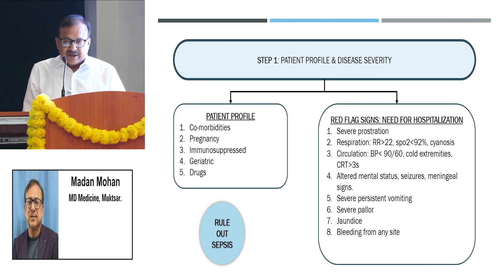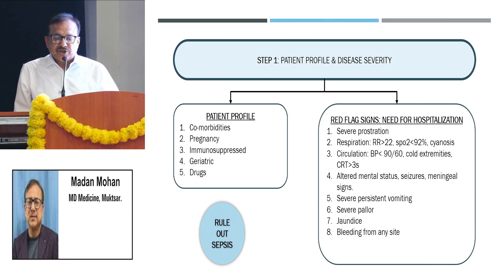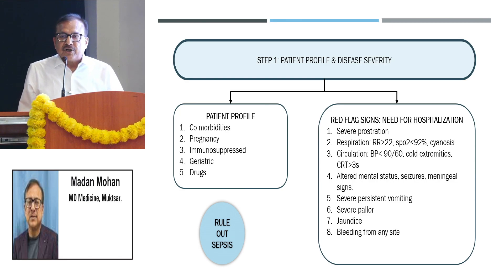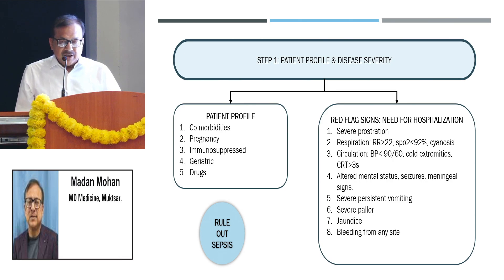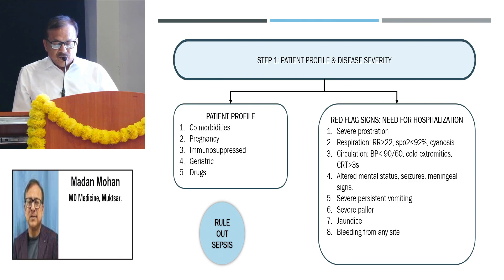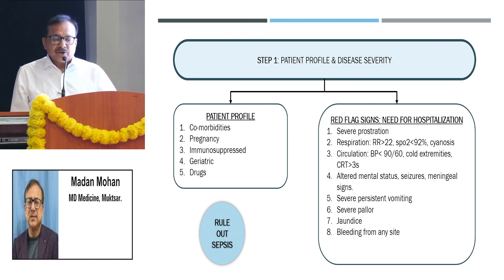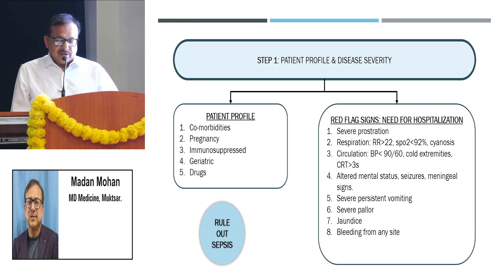The important red flag signs are severe prostration, respiratory rate of more than 22, or the patient is hypoxic with saturation less than 92, hypotension with BP less than 90/60, altered mental status or presence of seizure, severe persistent vomiting, pallor, jaundice, or bleeding from any site.